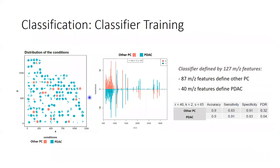And as you can see here, we also had the trouble of having an unbalanced cohort with a way higher number of PDAC cases. Nevertheless, the classifier shows on its own training data set an accuracy of around 90 percent and a sensitivity between 83 and 91 percent. It consists of 127 MZ features, 40 features defining the PDAC, and 87 features defining the diverse group of all other pancreatic cancers.